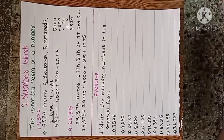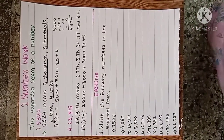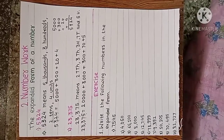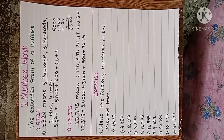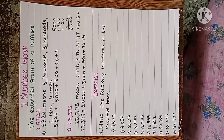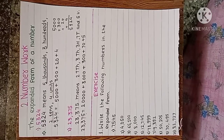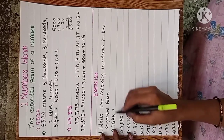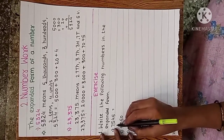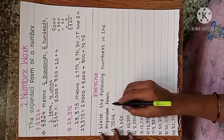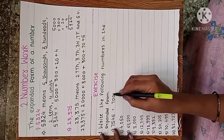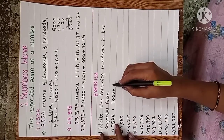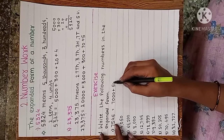Now we solve exercises on the expanded form of a number. Question one: write the following numbers in expanded form. We are given numbers and we have to write down the expanded form. First: seven thousand five hundred forty five — seven thousand, five hundred.